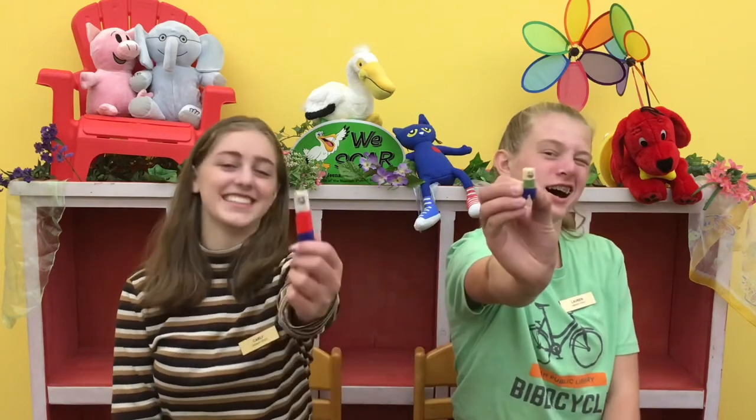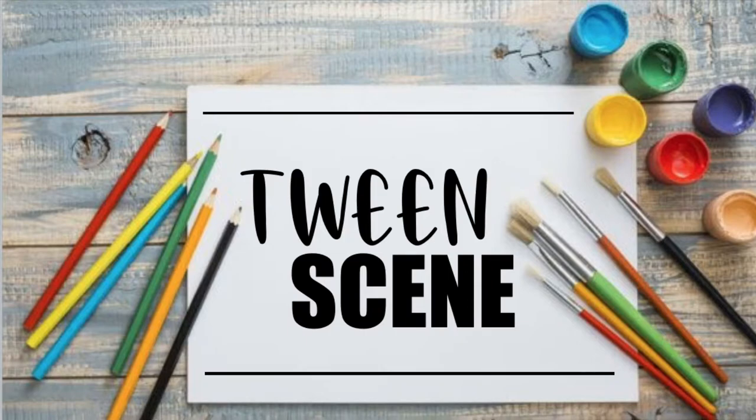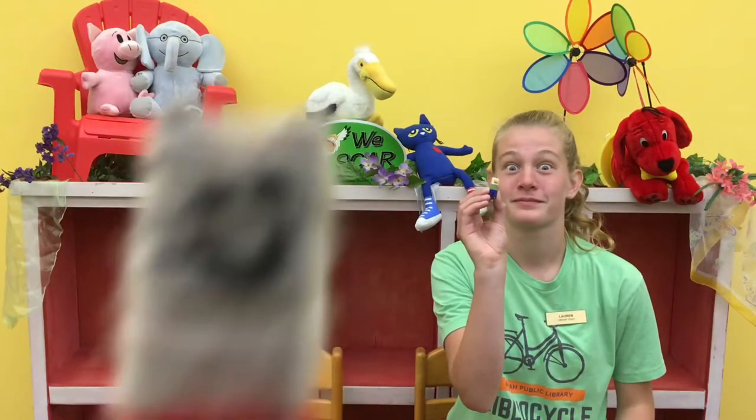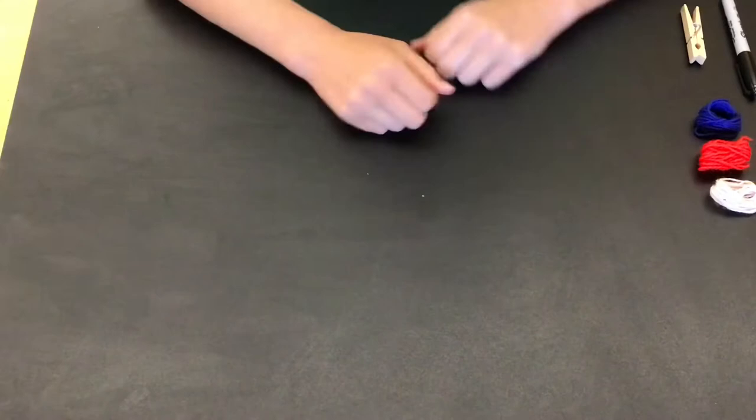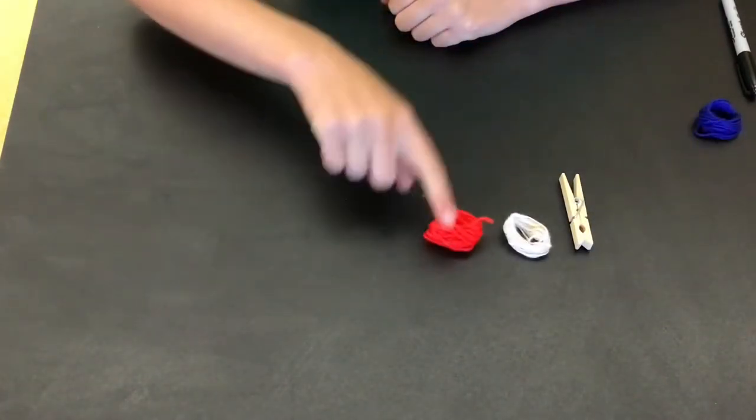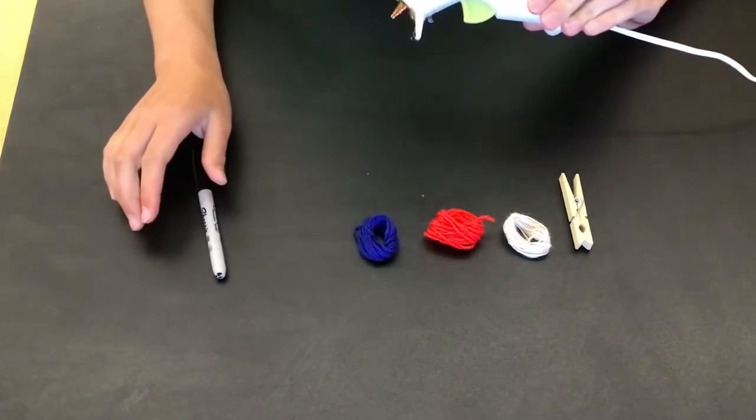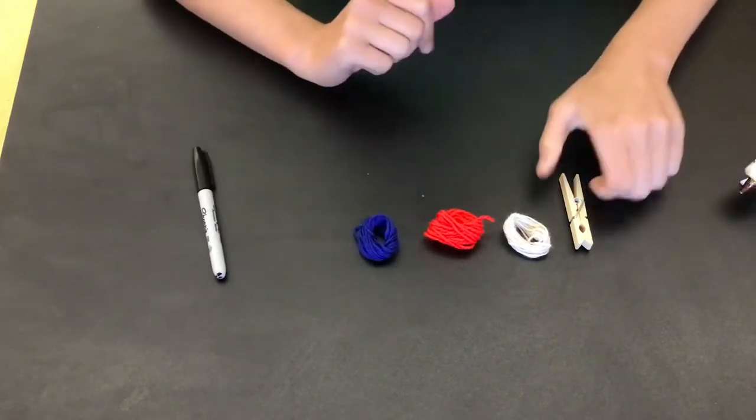Hi guys, my name is Carly. And I'm Lauren, and today we're making worry dolls. Let's get into the craft. Alright everybody, today you're going to need your clothespin, your three colors of yarn, a sharpie, and a hot glue gun or a bottle of glue, it really doesn't matter.